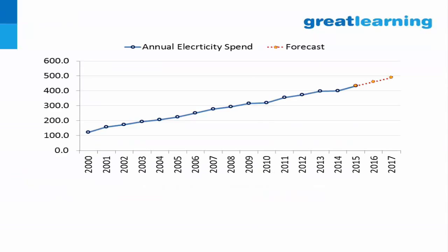Time series analysis: here you have annual electricity spend — what is the electricity spend in 2000, in 2001, in 2002, and so on. If you fit a line, you realize it's almost like a line. So if you have to forecast for 2016 and 2017, you can fit a line, extend it, and say that because in the past it happened like this, you expect electricity spend to happen similarly.